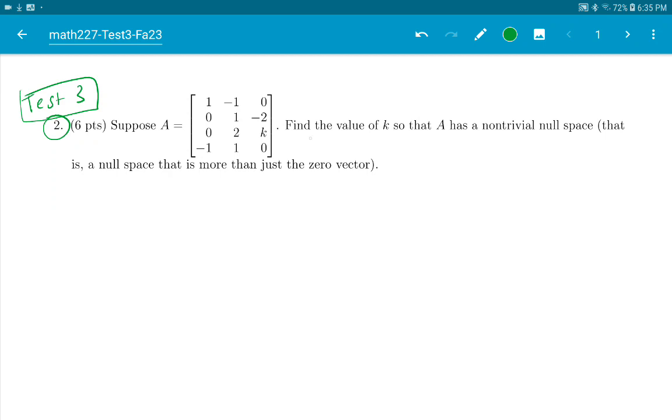Okay, let's solve it. It says, here's a matrix. Find the value of k so A has a non-trivial null space. Remember the null space? Null space is all vectors x where A times x equals 0. That's the null space.